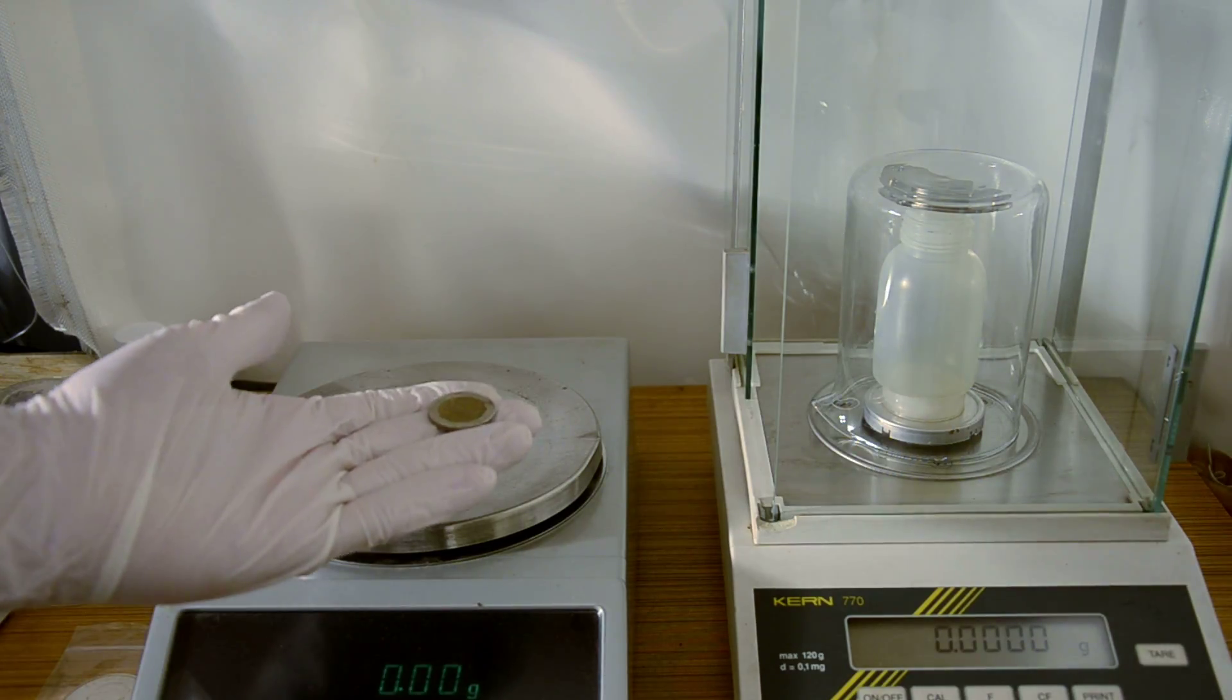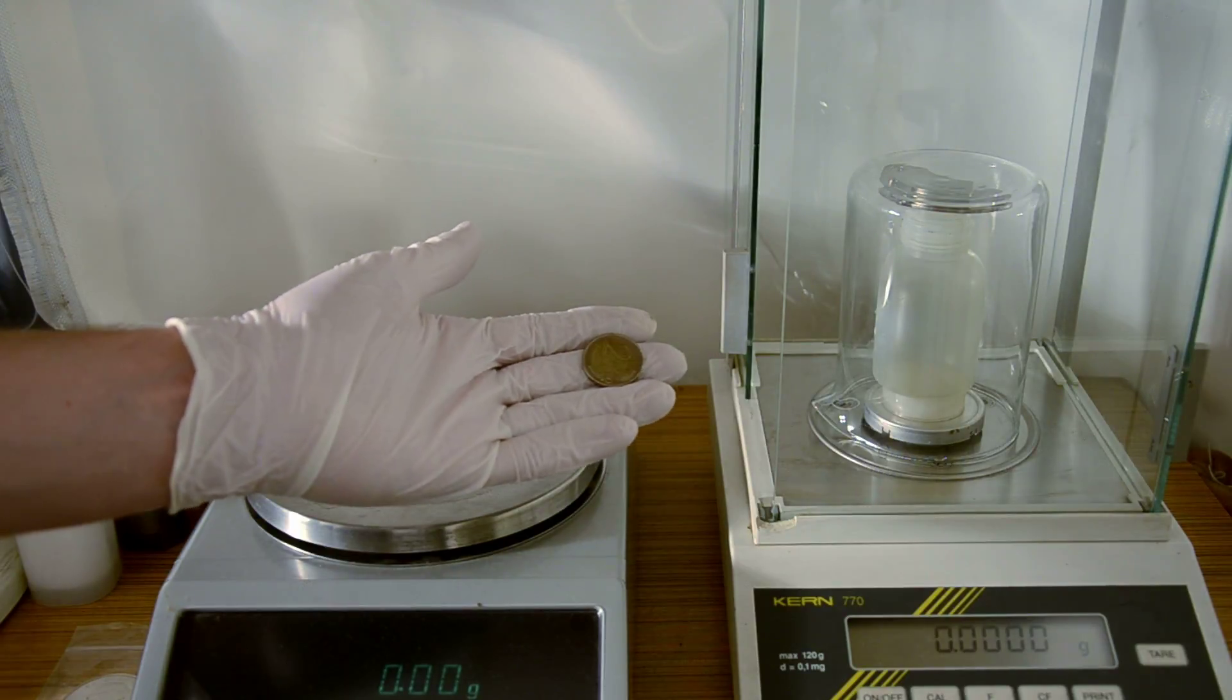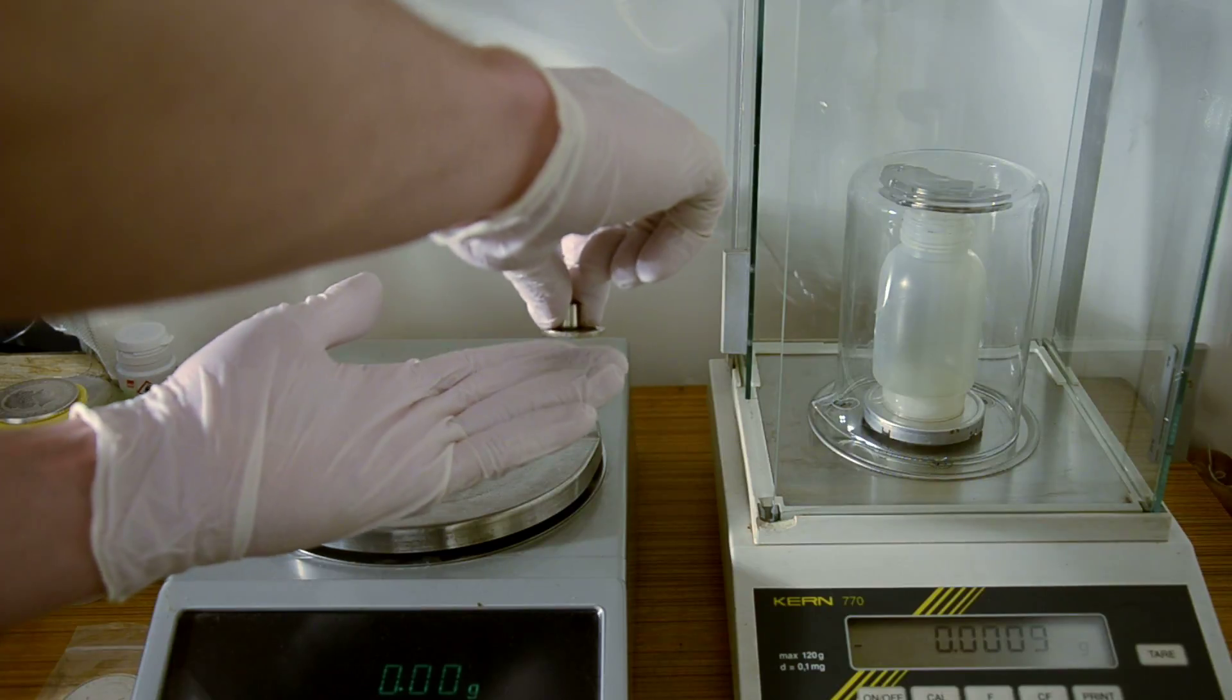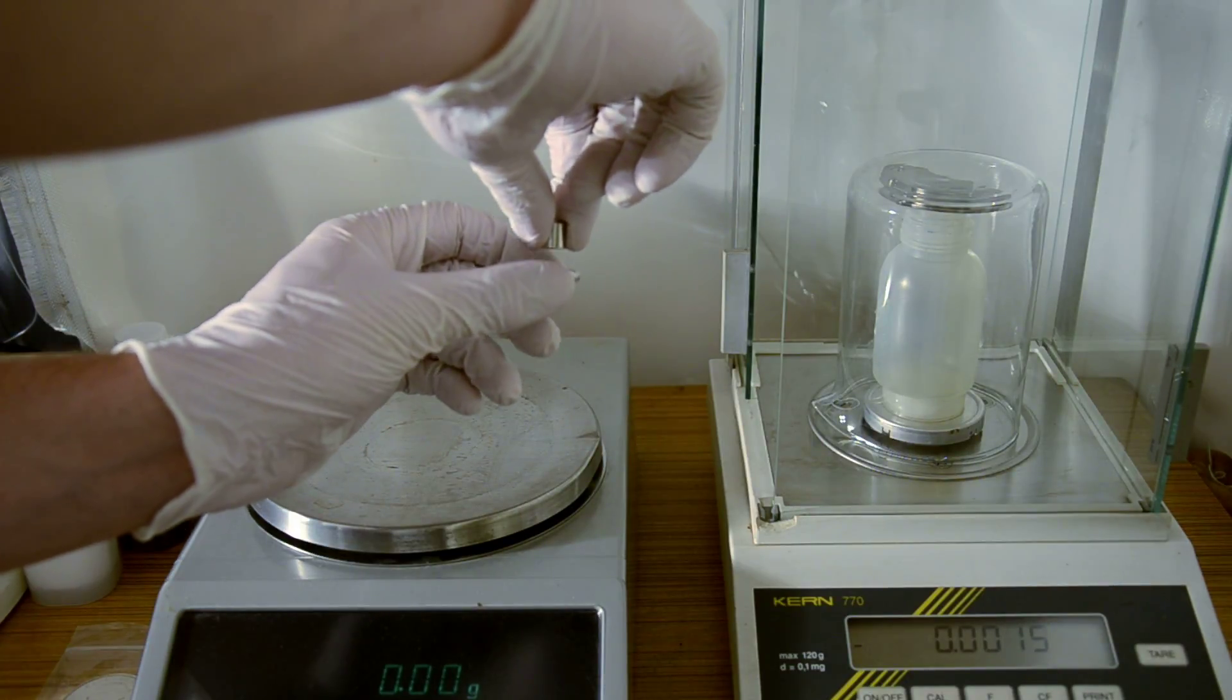For example, this coin is ferromagnetic. So if I put this neodymium magnet to the coin, you see it gets attracted.